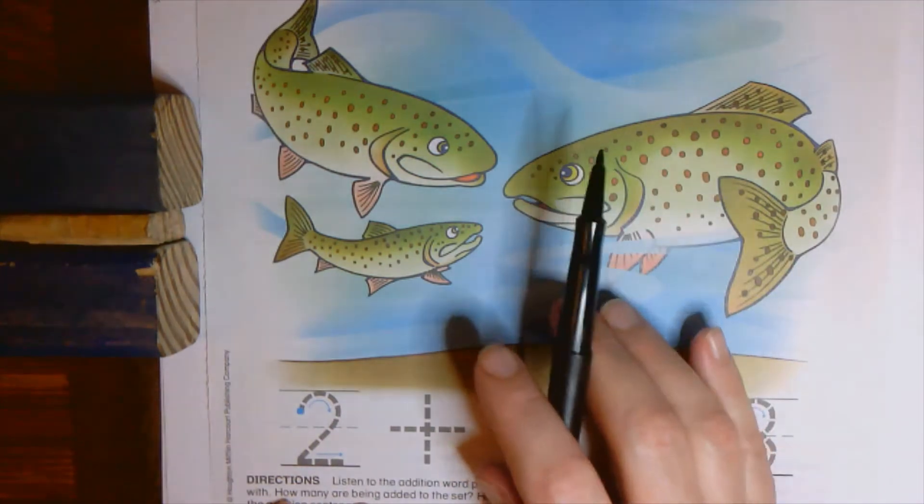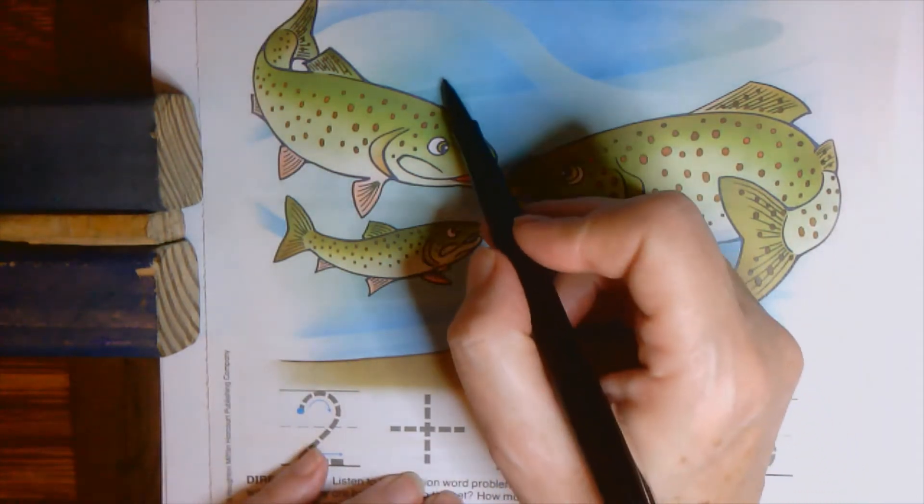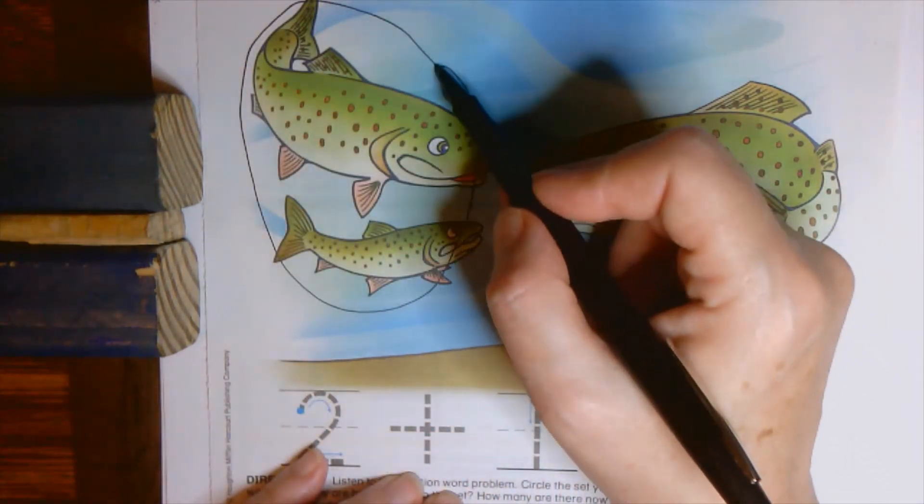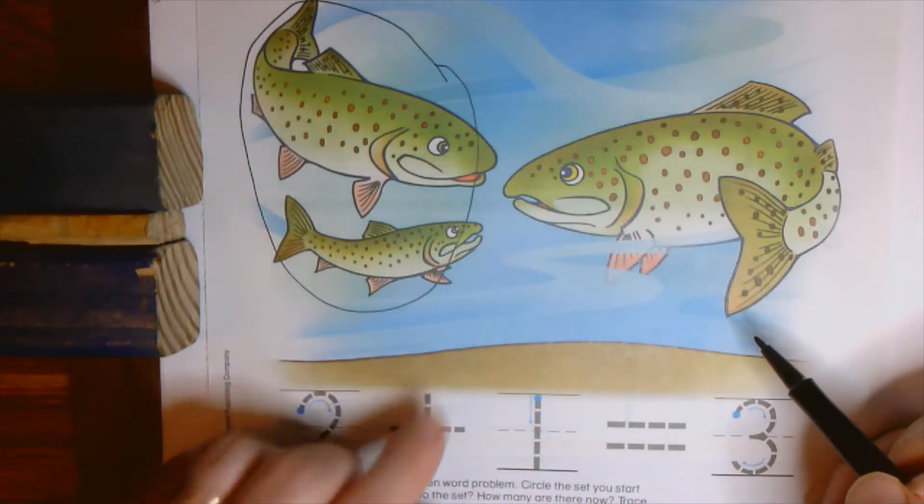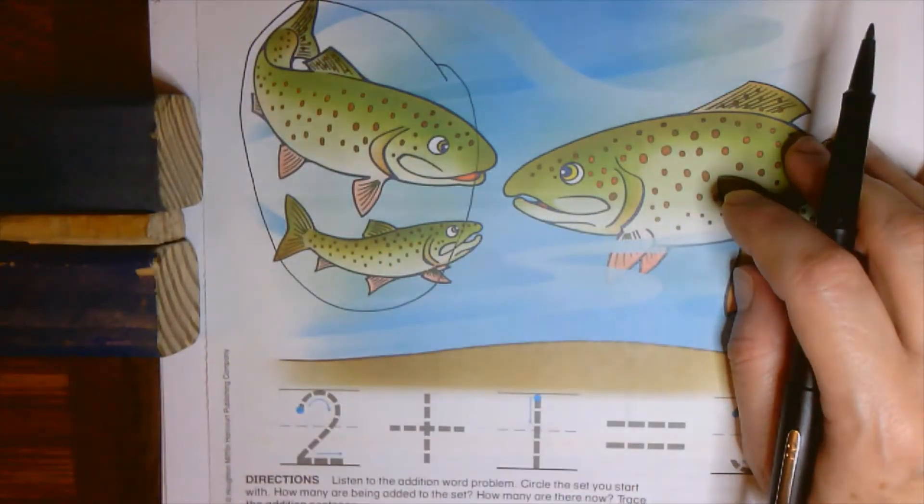So what we're going to do today to help practice this is to circle the set that we start with. Now it says right here that we're starting with two. So do you see how these two are right kind of over here? You guys know this from in the classroom, right? When you added things, I told you to put one group in one area and another group in another area. It's just the same thing in pictures.